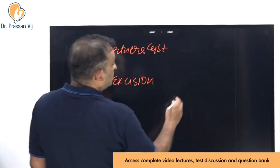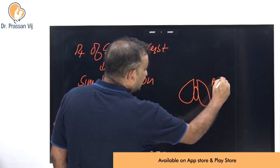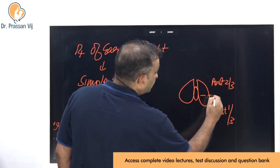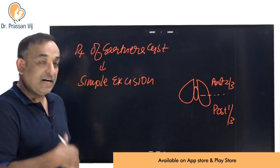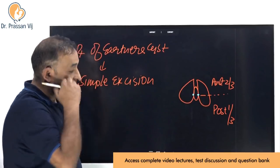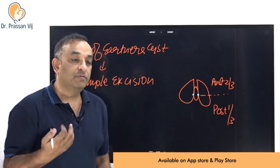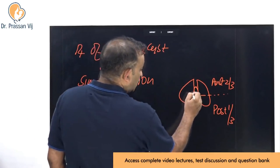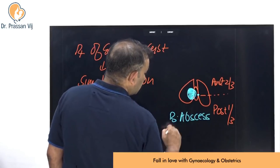Contrast this with the Bartholin's gland, which is present at the junction of the anterior two-thirds and posterior one-third of the vulva — not inside the vagina. This Bartholin's gland is an accessory sexual organ that helps in lubrication during intercourse. In sexually active women, the Bartholin's duct can become blocked, the collection can get infected, and form a Bartholin's abscess.